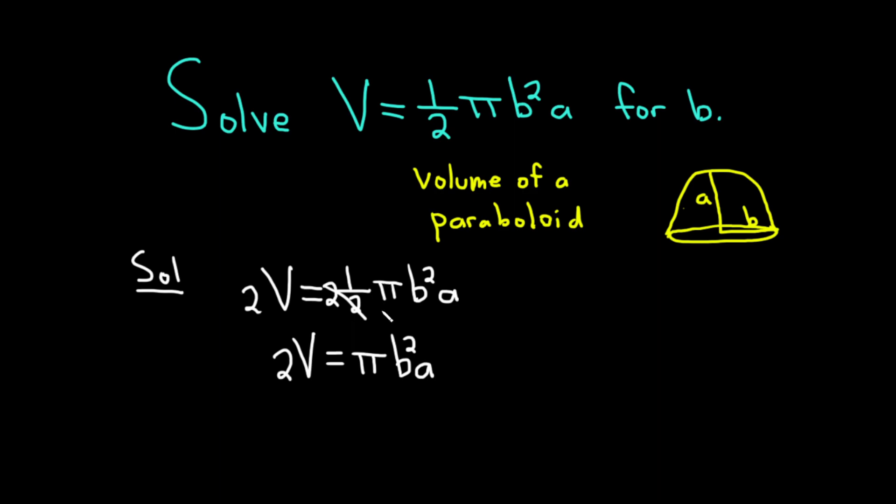And we're looking for b. So we need to get rid of this π and this a. So we can divide both sides by π a. And you can do that because it's being multiplied by π a. To get rid of it, you do the inverse operation, which is division.